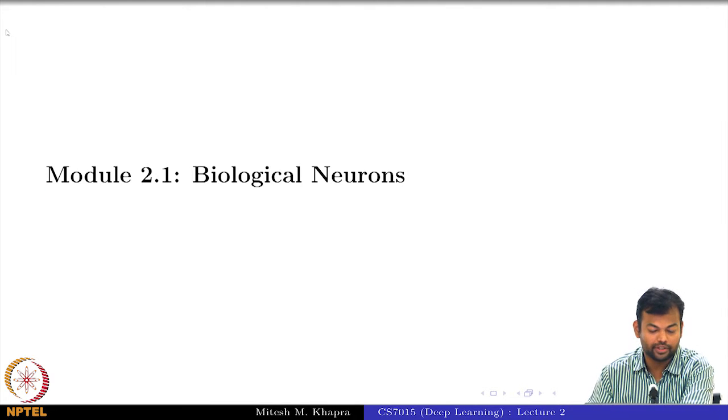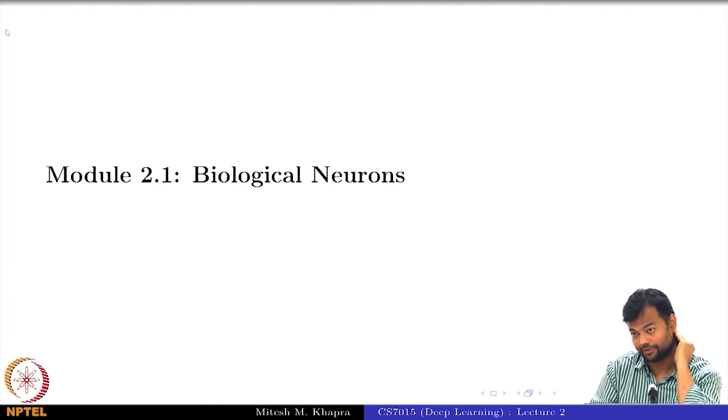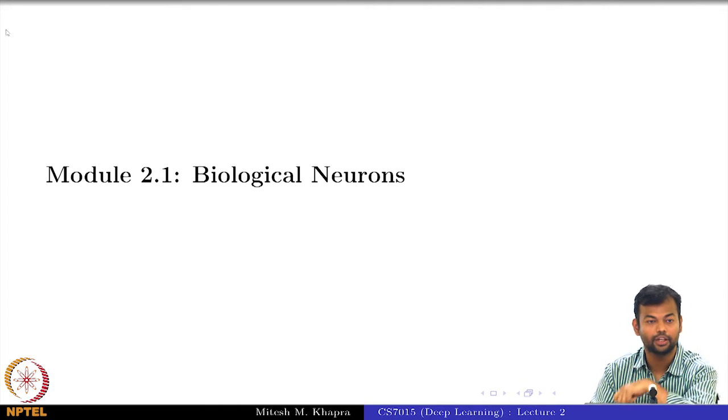Let us start module 1 which is on biological neurons. Remember during the history we started all the way back in the 1880s when we spoke about biological neurons. We will start there, spend a few minutes on it, and then go on to the computational models which is McCulloch-Pitts Neuron.